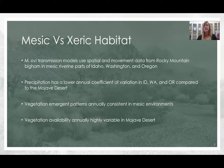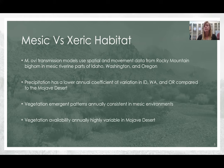Managers try to mitigate Mycoplasma ovipneumoniae transmission by modeling space use and movement. However, the models for disease transmission risk have all been derived from Rocky Mountain bighorn sheep populations in mesic riverine parts of Idaho, Washington, and Oregon.